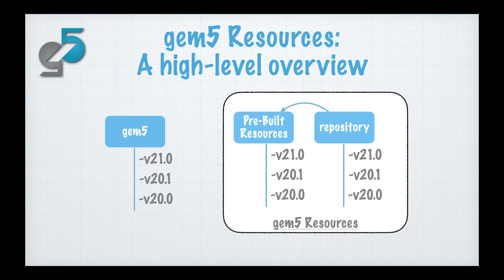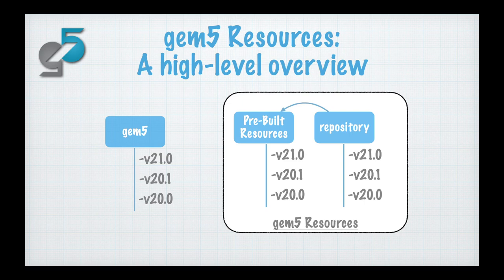GEM5 Resources has a slightly simpler architecture. It consists of a repository containing the source code for all the resources and instructions on how to build them. GEM5 Resources also consists of these pre-built resources, built on these sources and stored on our Google Cloud infrastructure. Importantly, GEM5 Resources is tagged in sync with the releases of GEM5. So if you're working with GEM5 version 20.1, you can check out version 20.1 of the GEM5 Resources repository and obtain resources compatible with that version.